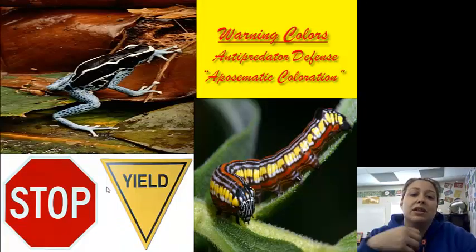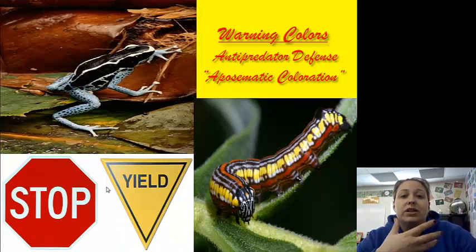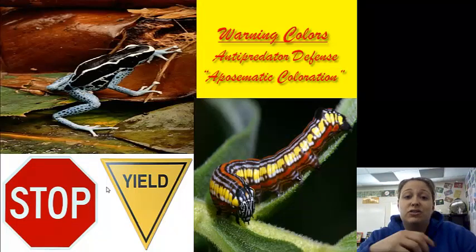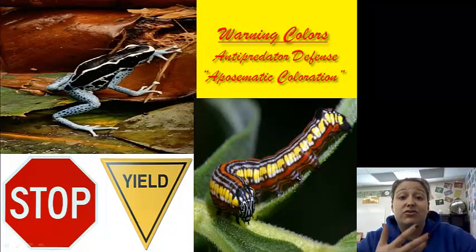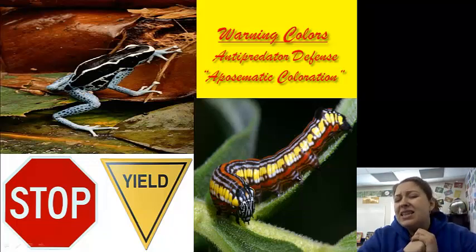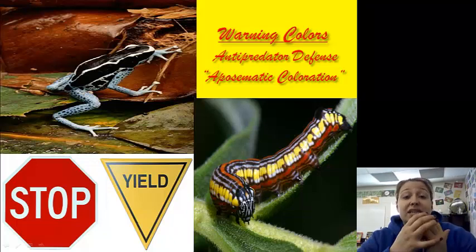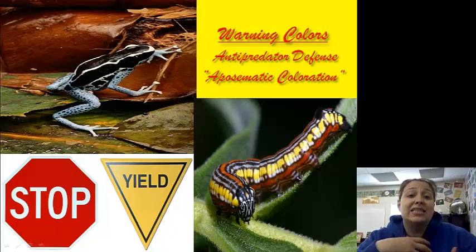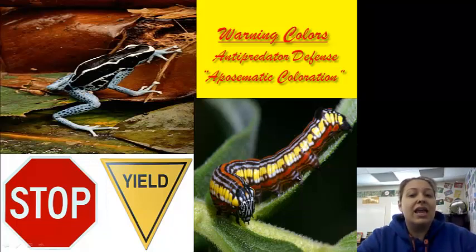Now, warning colors — there are lots of different warning colors found in nature. Some organisms have blue and black stripes, some have red stripes or orange markings, or different colored stripe patterns. That typically means to leave them alone, and it signals to other organisms that they don't taste good. This is an anti-predator defense, and it's called aposematic coloration.